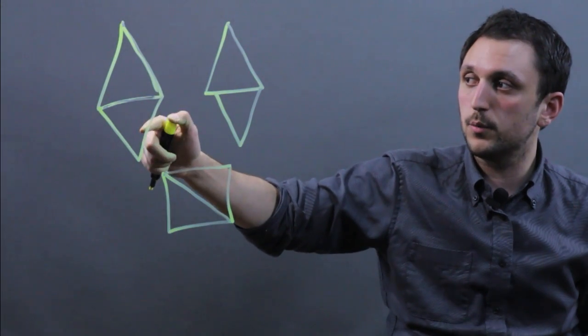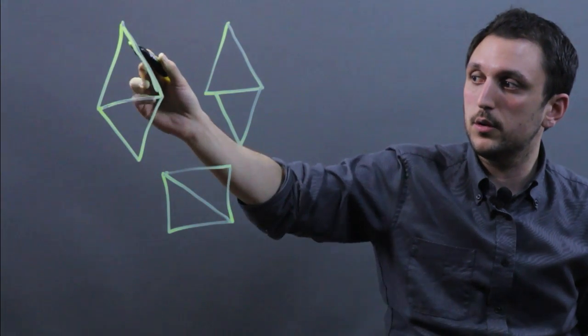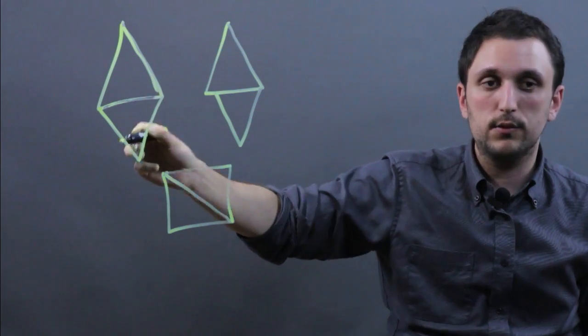This one kind of looks like a rhombus, where this angle would equal this angle, this angle would equal this angle, and all four sides would be equal.